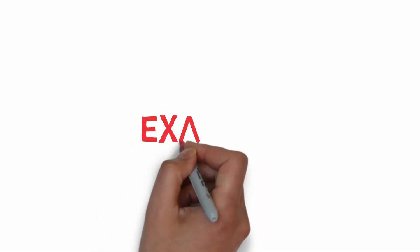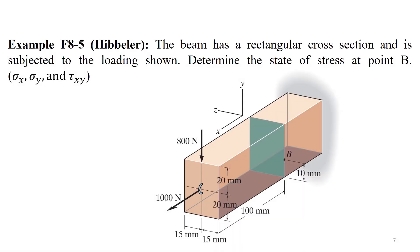Now we're going to look at an example. The beam has a rectangular cross section and is subjected to the loading shown. Determine the state of stress at point B: sigma X, sigma Y, and tau XY.